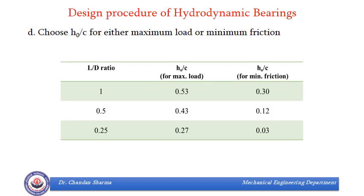We then assume a suitable value of H0/C, where H0 is the minimum oil film thickness and C is the radial clearance fixed in the previous step. For the chosen L/D value we have two options: H0/C for maximum load, and H0/C for minimum friction. If designing for maximum load we take the corresponding H0/C value from the data; for minimum friction we refer to the other column. If nothing is specified we can choose either. For example, with L/D equal to 1 designing for maximum load, we assume H0/C equal to 0.53.